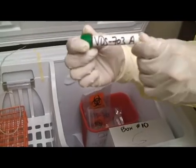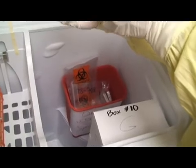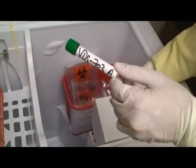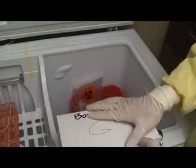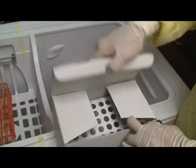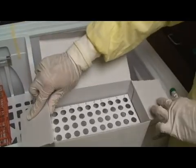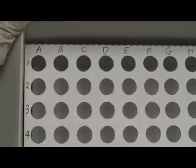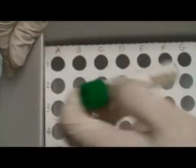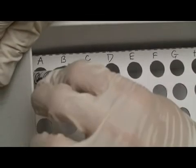And then VDS 703A goes into the next available box, which will be box number 10. So we open box number 10, and we notice a grid system on here. So just fill it sequentially. We're going to put VDS 703 in A1.